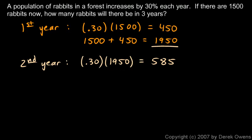So I need to now, to calculate the population at the end of the second year, I need to add that 585 to my original 1950. Remember that 1950 was what I started the second year with, and then I gained another 585 rabbits. So at the end of the second year, there are 2535 rabbits.